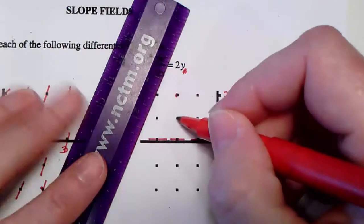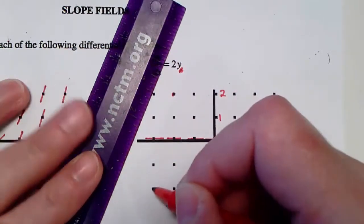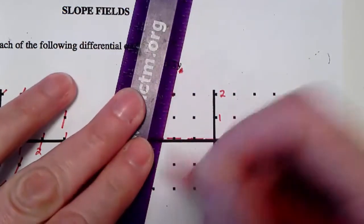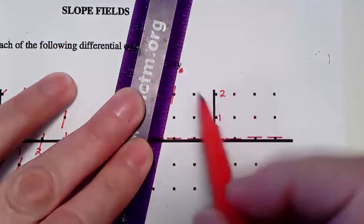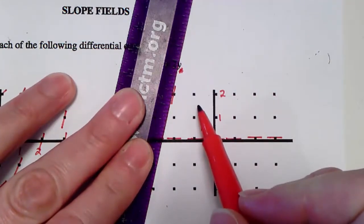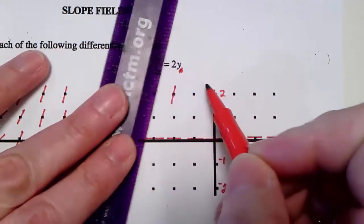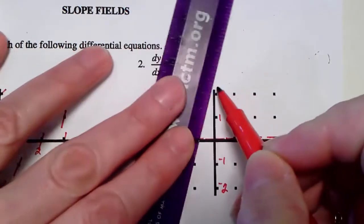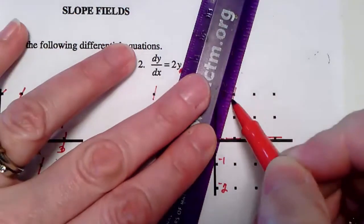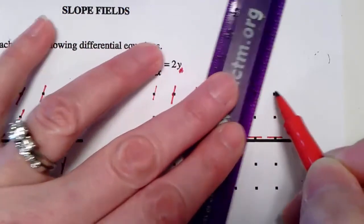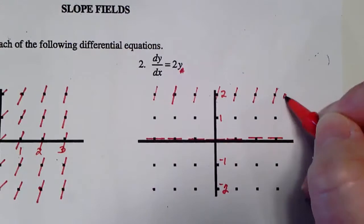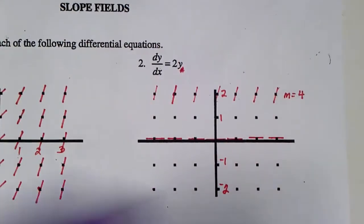So I can go down 1, 2, 3, 4, and over to the left 1. Now all across here where y equals 2, I'm going to have that slope of 4. So I'm going to slide my straight edge and fill in all these points, being careful to keep the straight edges parallel to the other ones as possible. So all along here I had a slope of 4.